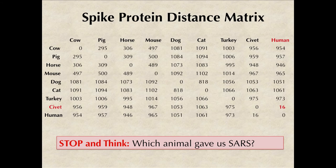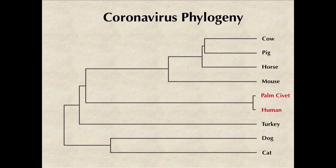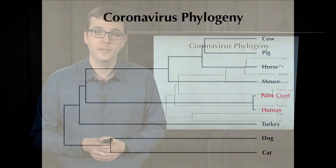But when we run additive phylogeny on this adjusted distance matrix, our suspicions are indeed confirmed. The animal that gave us SARS is the palm civet, a creature so fearsome that I hesitate to even show it to you.